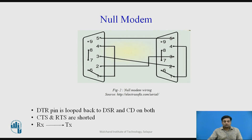This is figure 2, showing the null modem wiring. Pins 6, 1, and 4 on both sides are looped back as described. Pins 7 and 8 are shorted together, and pin 5 on both sides are connected to each other to provide a common ground reference.